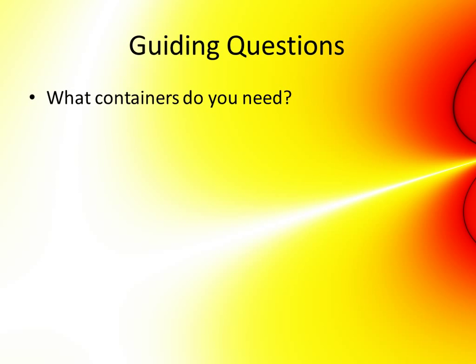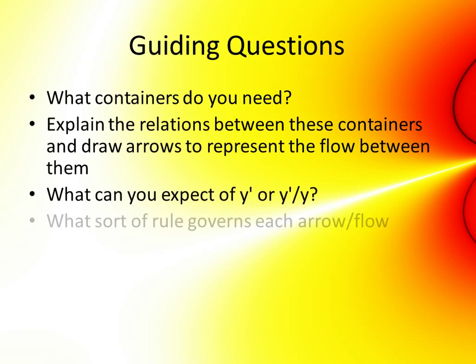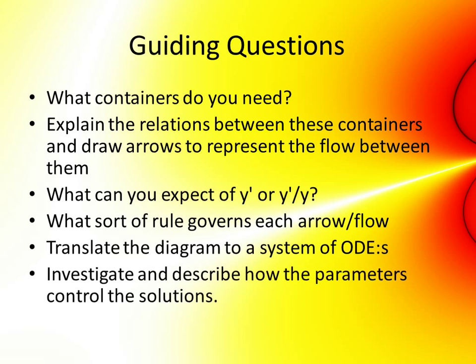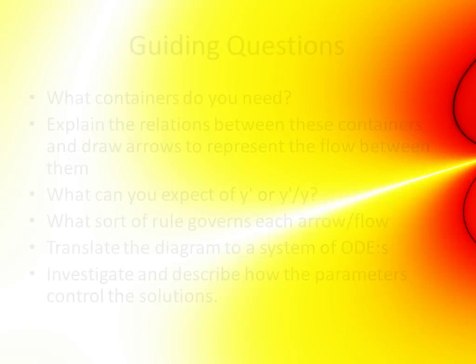I also had sets of guiding questions: What kind of containers? What will you expect to happen to the rate of change? What will you expect with the relative rate of change? What does this tell you about the arrows? How do you construct the diagram? And then how do you translate that into differential equations? And afterwards, can you describe the solutions and see what happens when you change parameters?